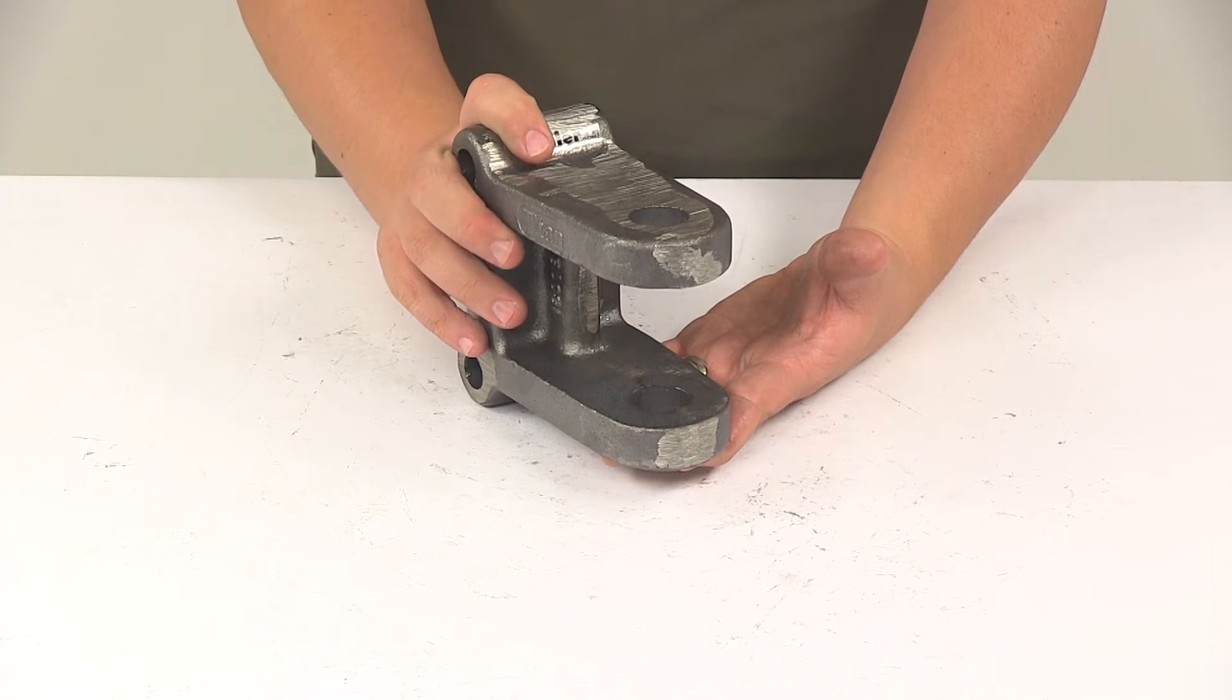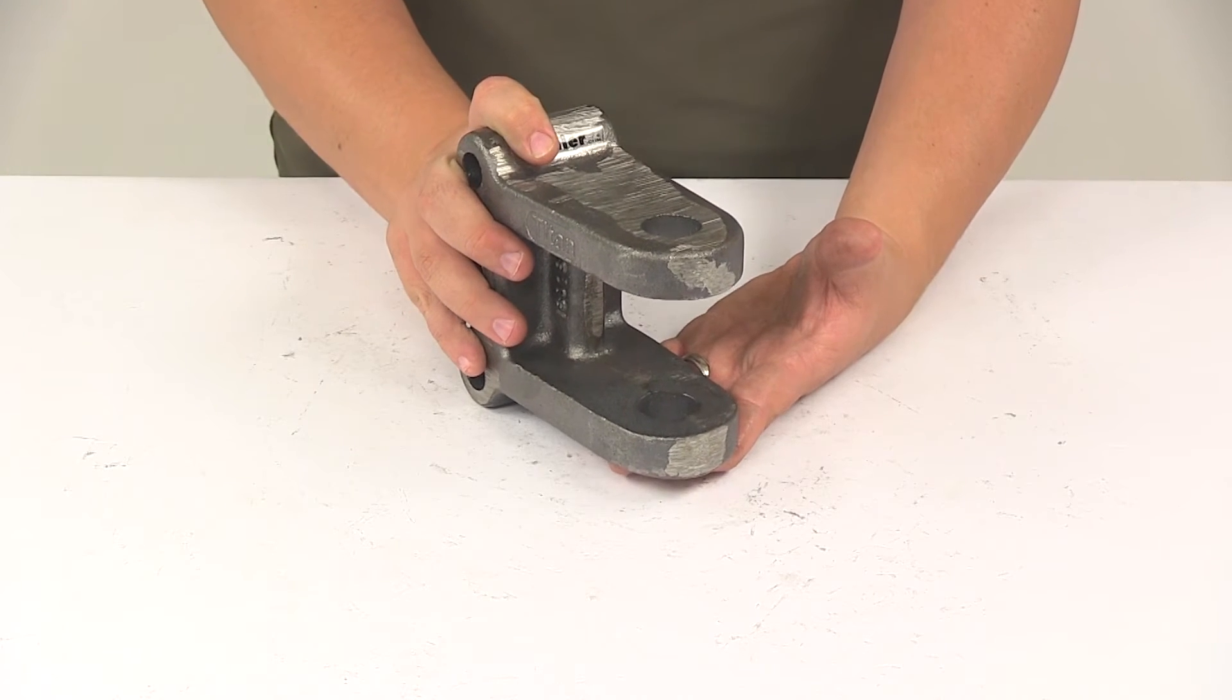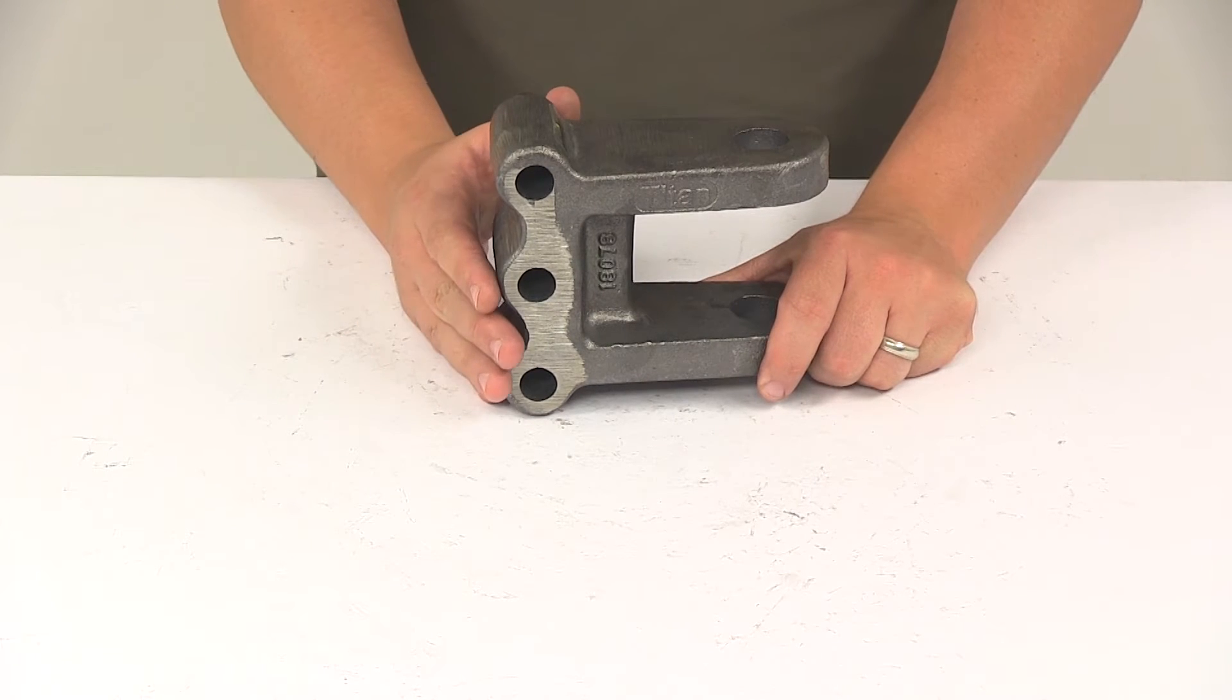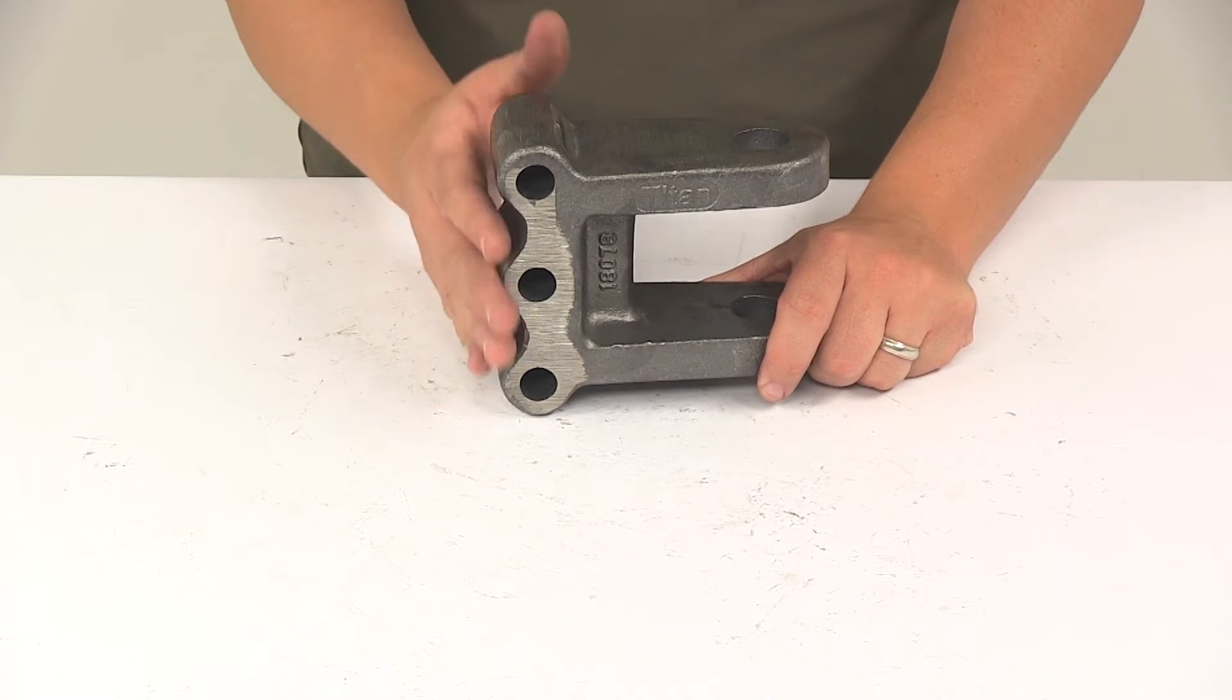Channel bracket mounting hardware are sold separately. We do have them here at eTrailer.com if you're in need. This one does require three mounting holes and three mounting bolts to get it fully installed.